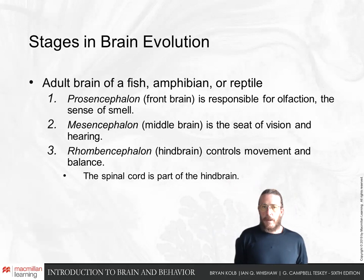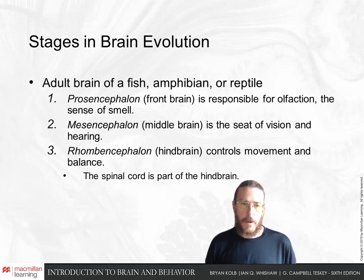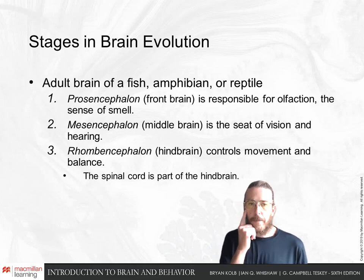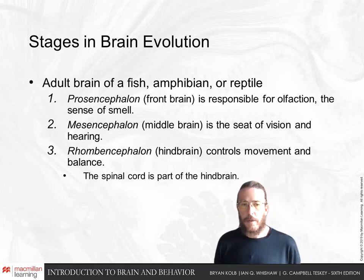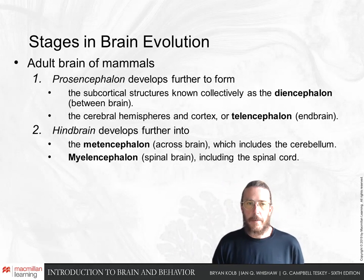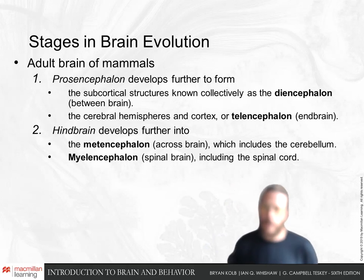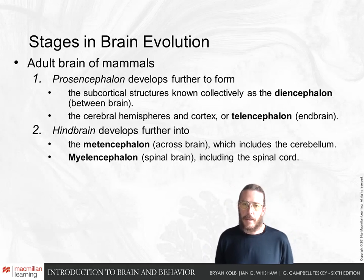We share with the adult brain of fish, amphibians, and reptiles a stage in embryonic development where our brain has three parts: the prosencephalon (forebrain), mesencephalon (midbrain), and rhombencephalon (hindbrain). The prosencephalon is responsible for smell, the mesencephalon for vision and hearing, and the rhombencephalon controls movement and balance including the spinal cord. In mammals, the prosencephalon further develops into the diencephalon — containing the thalamus and hypothalamus — and the telencephalon, which is the cerebral cortex. The hindbrain develops into the metencephalon (cerebellum) and myelencephalon (spinal cord).